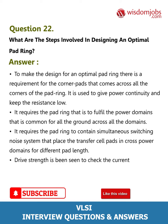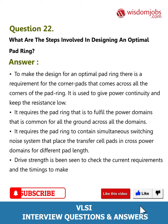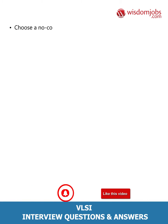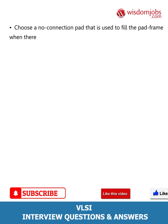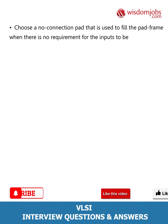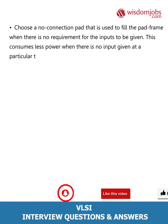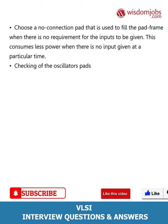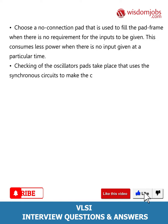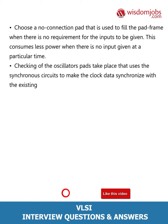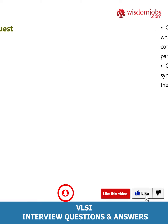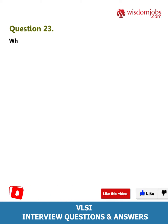For different pad lengths, drive strength is checked for current requirements and timings. To make the power pads, choose a no-connection pad used to fill the pad frame when there is no requirement for inputs; this consumes less power when no input is given at a particular time. Checking of the oscillator pads takes place, using synchronous circuits to synchronize the clock data with the existing one.